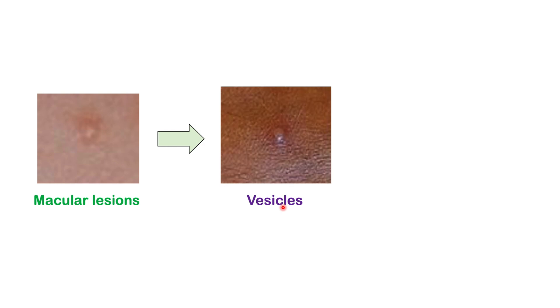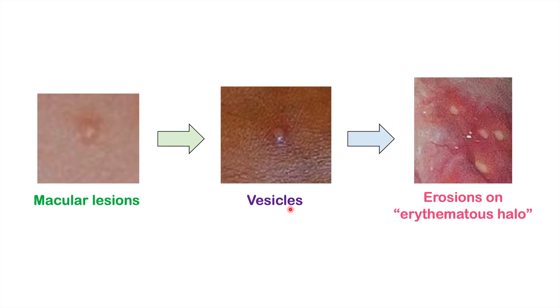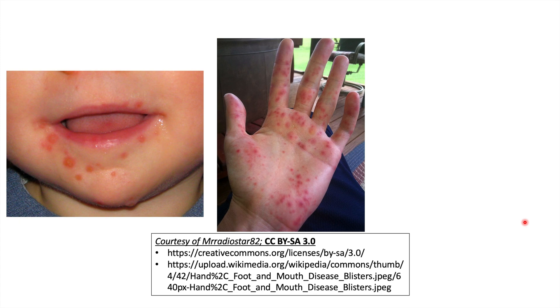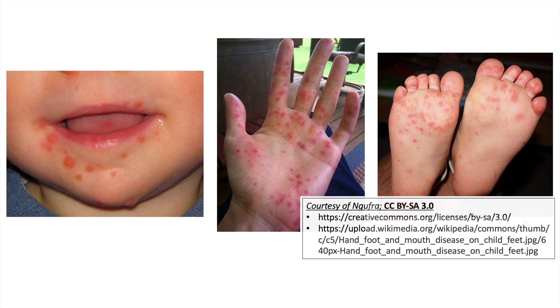The rash often starts out as a macular — flat — lesion, which then raises and becomes fluid-filled, forming vesicles. In some cases the vesicles can become eroded, and we see erosions on an erythematous halo, especially inside the mouth. Images of the rash show it around the mouth, on the hands, and on the feet as well.